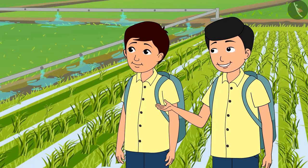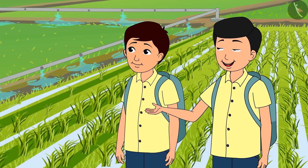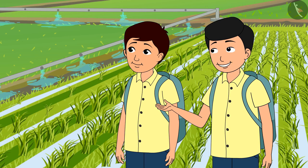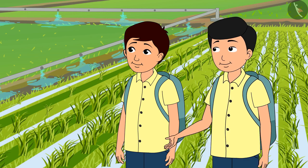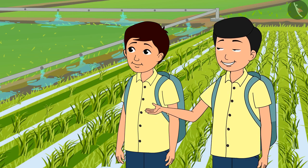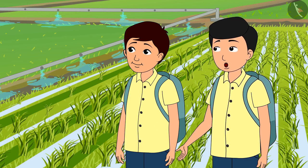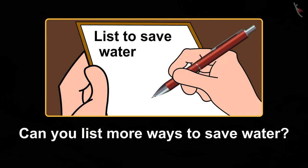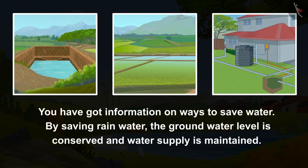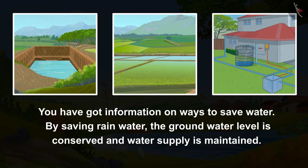Thank you uncle. Today both of us got to see many ways to save water. We have come to know that if there is water, there is life — water should be saved. Children, can you list more ways to save water? In this video you have got information on ways to save water. By saving rainwater, the groundwater level is conserved and water supply is maintained.